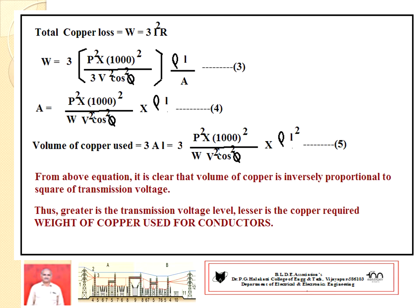Total copper loss in a three-phase line equals 3I²R, where R is resistance and I is load current. Substitute the respective values and obtain equation 3. From the copper loss expression, convert to find cross-sectional area A — develop equation 4.